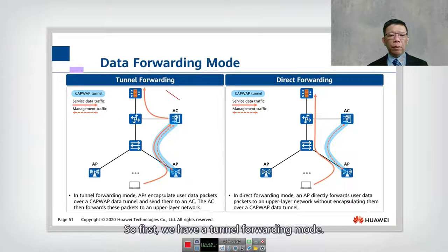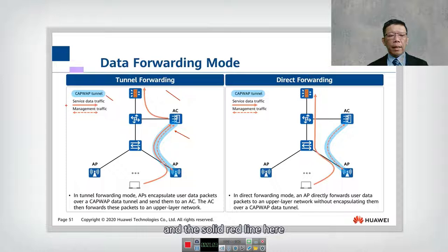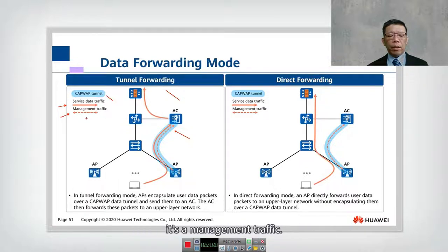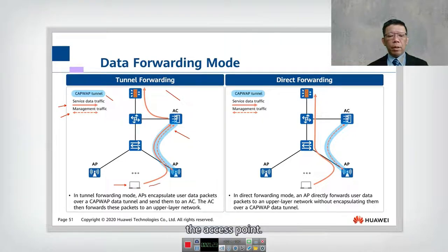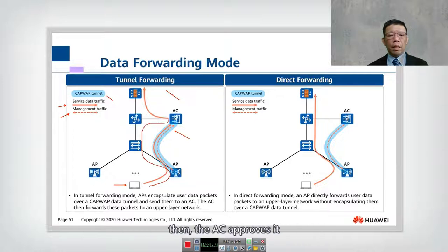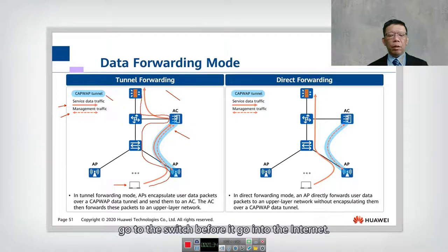First, we have tunnel forwarding mode. In the diagram, the blue color represents the CAPWAP tunnel, the solid red line represents service data traffic, and the dotted red line represents management traffic — the AP's management traffic is controlled by the access controller. When a station, such as a laptop, wants to connect to the internet, it connects to the access point, then to the switch, the aggregation switch, then passes to the AC. The AC approves it, then traffic goes back the same path through the switch before reaching the internet.